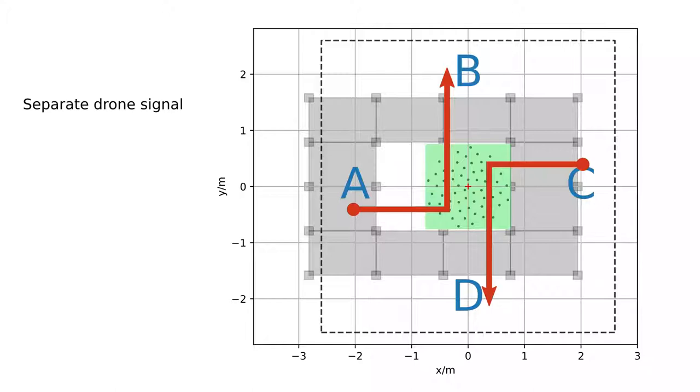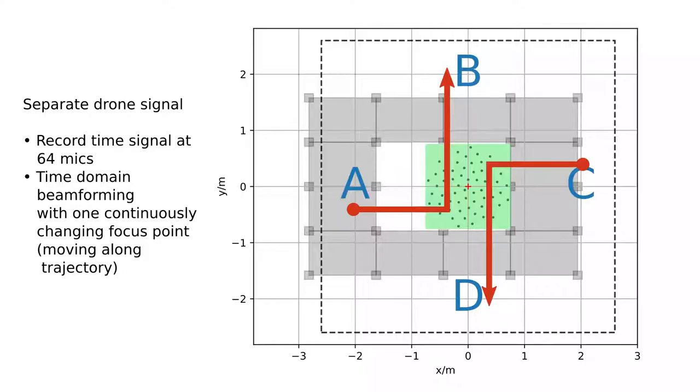So step two, separation of drone signals. We start again with what we did anyway. We record synchronously with 64 microphones and then again we do some beamforming but this time not with over 600,000 points but with only one. Which however moves along the trajectory we detected earlier. After that we are done. We repeat this for every path we found and we get the path specific time signal.